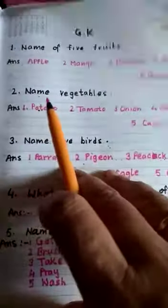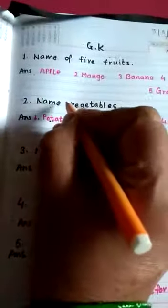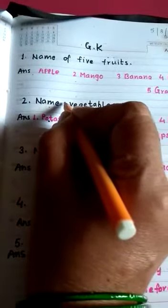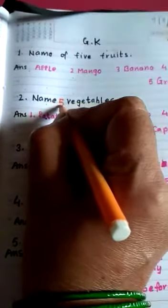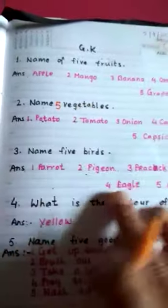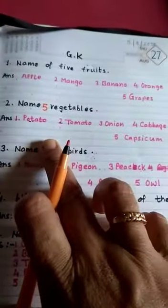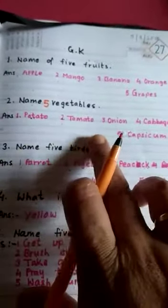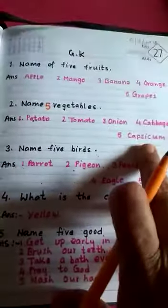Next question. Name of 5 vegetables. Potato, Tomato, Onion, Cabbage, Capsicum.